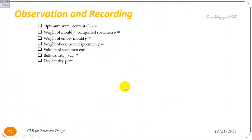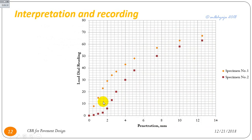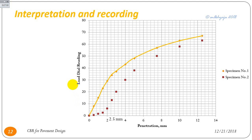Observation and recording: the load values recorded from the machine for the respective penetrations for Sample 1 and Sample 2 are plotted on a graph with penetration on the x-axis and load on the y-axis. For Sample 1, the initial curve is convex upward — this is the ideal nature of the CBR curve — so no correction is needed.